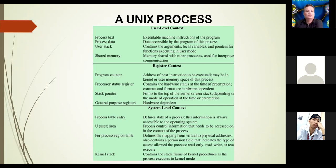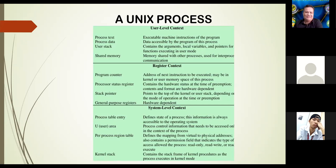System level context: process table entry — defines the state of a process; information is always accessible to the operating system. Process ability (U area) — process control information that needs to be accessed only in the context of the process. Per-process region table — defines the mapping from virtual to physical addresses and also contains a permission field indicating the types of access allowed to the process: read only, read/write, or read/execute.